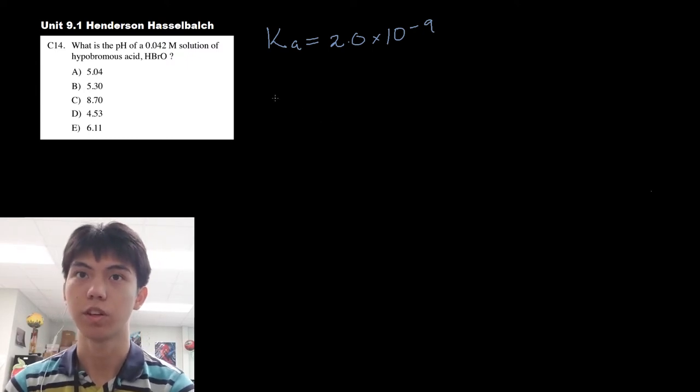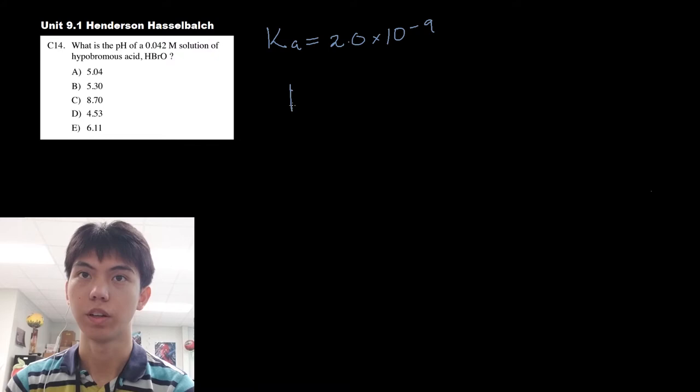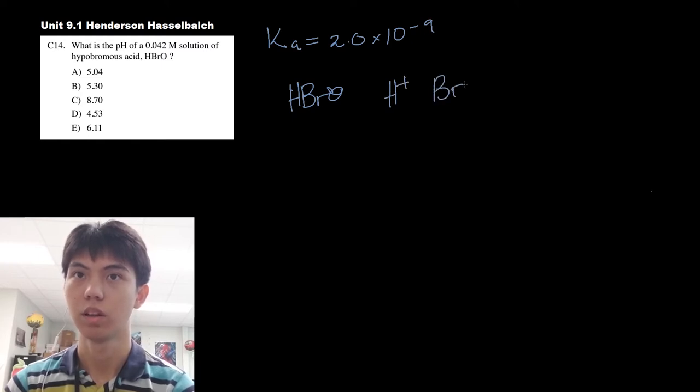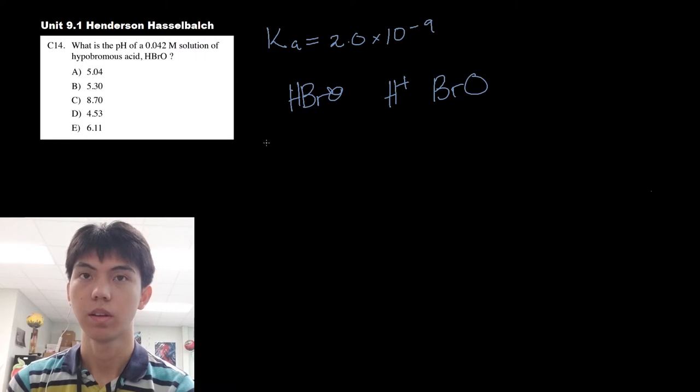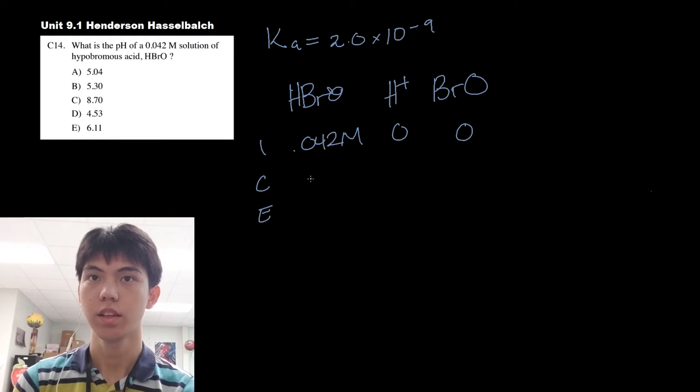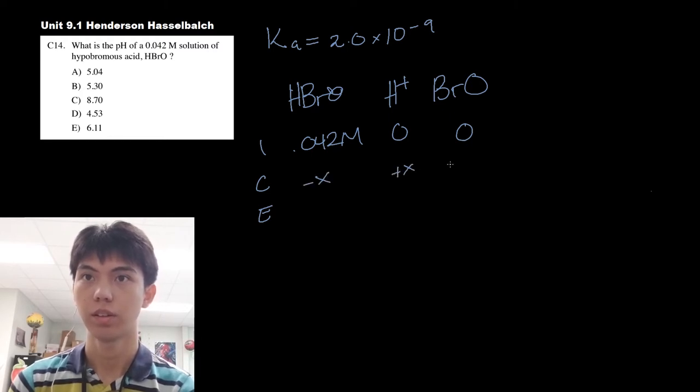So the first thing to do, let's set up an ICE box. We can put in HBrO, and then it splits up to its components of H+ and bromine, bromic acid. You do initial, change, and equilibrium, and we're given that it has 0.042 molars already. These two have zero. Since this is just one coefficient for each of these, we just do minus x, plus x, and plus x. So it becomes minus x, x, x.